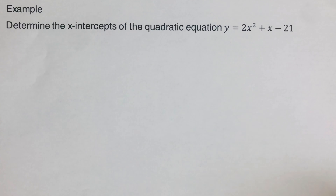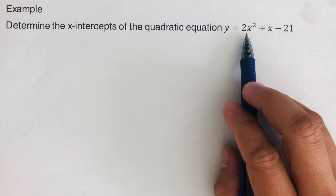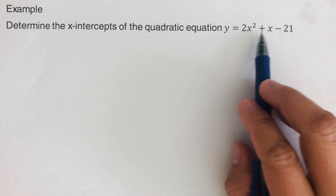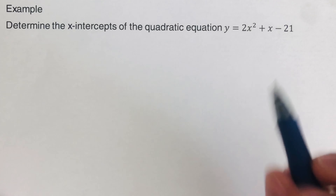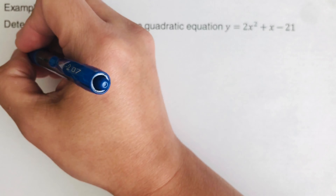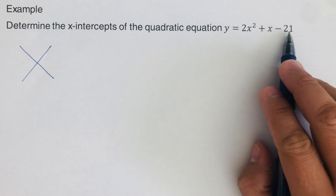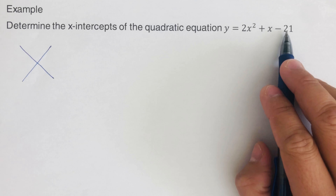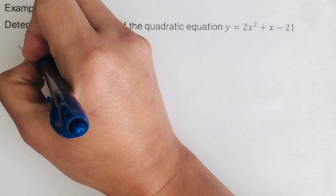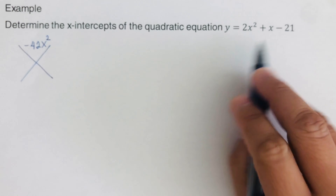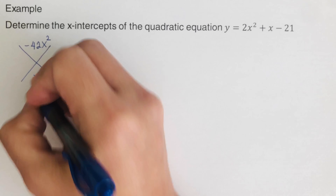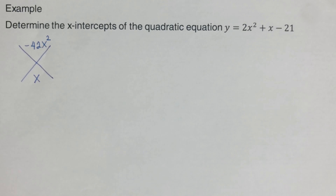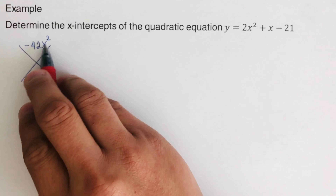Now let's go over the second problem. We'll break it down into its factors using the box and diamond. Starting with the diamond: the product of the first and last terms is 2x squared times negative 21, which gives us negative 42x squared. The middle term goes at the bottom of the diamond.